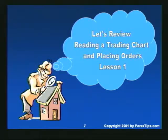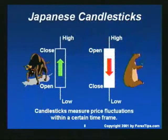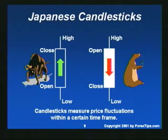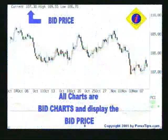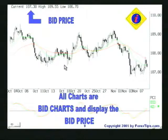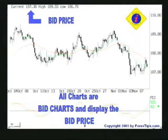A quick review of Lesson 1: we are watching Japanese candlesticks, which monitor the open, high, low, and close of a time period. Bullish candles mean the market is rallying; bearish candles mean the market is reacting and coming down. Bullish candles will be white in this presentation and bearish candles will be black. This chart is a two-hour chart — each candle represents two hours.